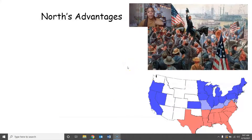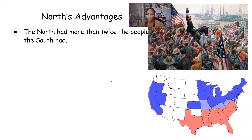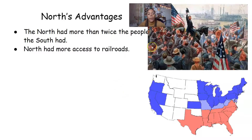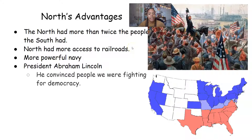Starting with the North's advantages — things that are working in their favor. The North had more than twice the people the South had, a huge population. More men and more people should be an advantage. The North also has more access to railroads, which will help transport supplies and soldiers. The North also has a more powerful navy. And we have President Abraham Lincoln, who proves to be a great leader — he convinces people that we're fighting for democracy, which drives motivation to fight.